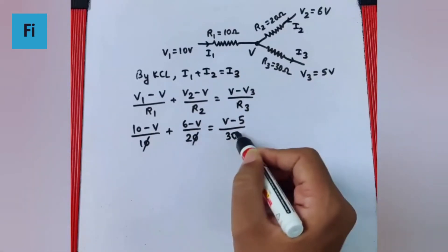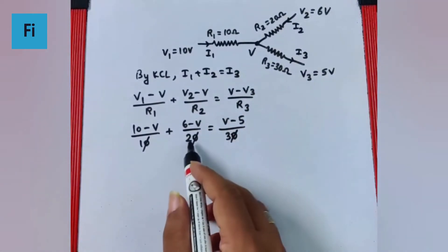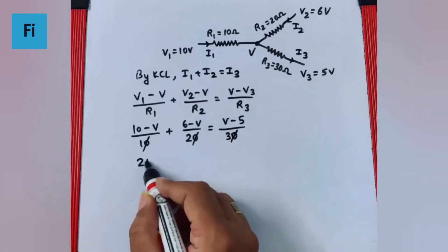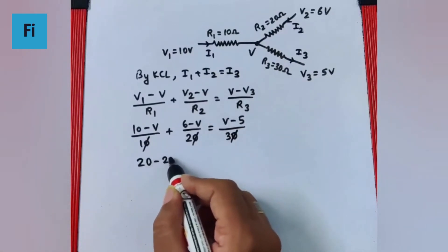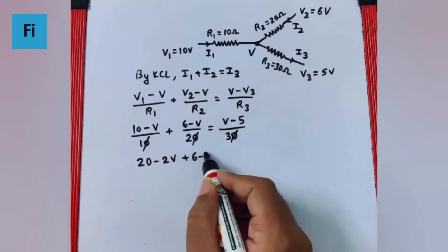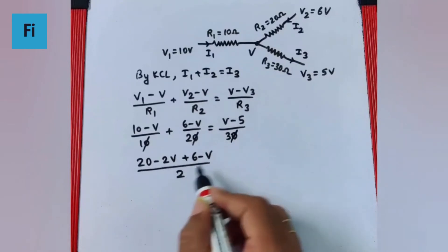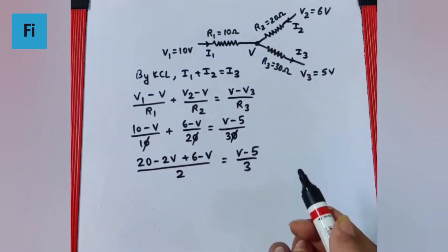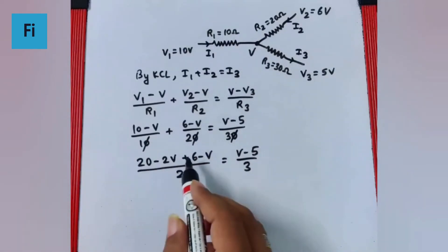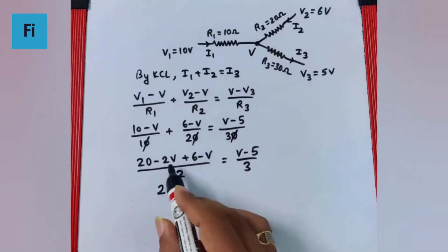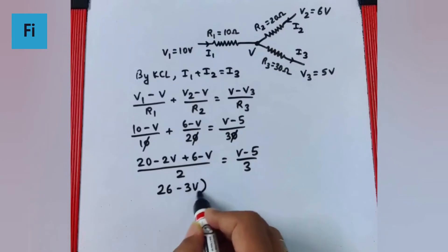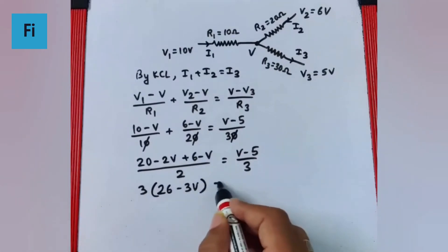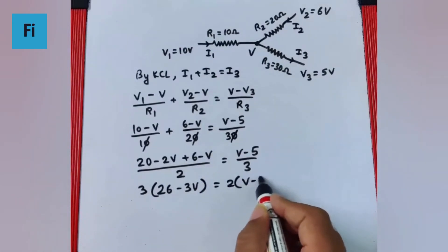Canceling zeros throughout, we get 20 minus 2V plus 6 minus V divided by 2 equals V minus 5 by 3. This simplifies to 26 minus 3V equals 2 times V minus 5. Cross multiplying, we get 3 times 26 minus 3V equals 2V minus 10.